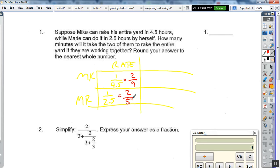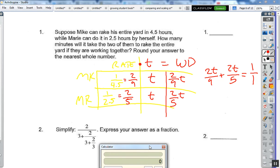So then, how long will it take for them to rake it together? We know that rate times time equals work done. Mike is going to do 2 ninths times t of the work, and Marie is going to do 2 fifths times t of the work. And I know that 2t over 9 plus 2t over 5 is going to equal 1 over 1 because that's one job. We need a common denominator so I can combine these fractions, and the common denominator for 9, 5, and 1 is 45.